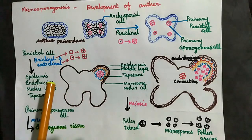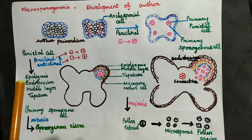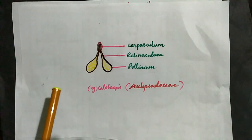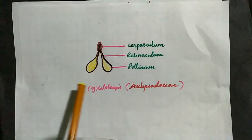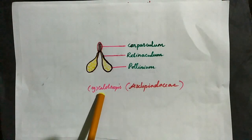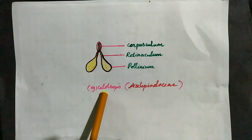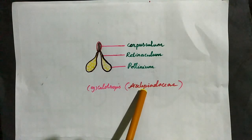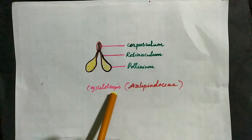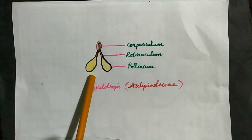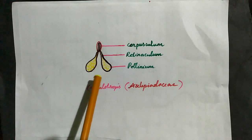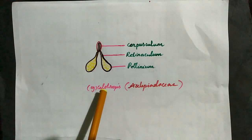The next topic is pollinium. In some plants, like Calotropis, which belongs to the family Asclepiadaceae, the microspores do not separate. In Calotropis and related species, all the microspores of an anther remain together as a single mass called the pollinium.